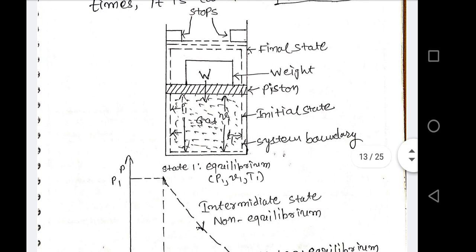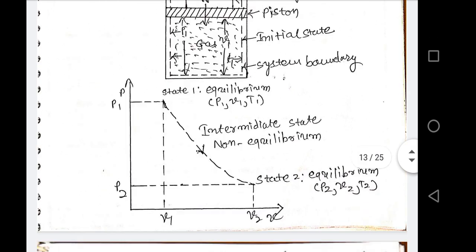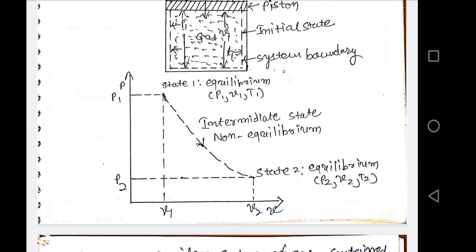Now when I remove this weight — this is a very important point — when I remove the weight, the piston directly moves up to the stops condition. The piston automatically moves in the upward direction up to the stops. In that position, volume will be increased and pressure will be decreased. So we get position number 2: P2 and V2, state 2 equilibrium P2, V2, T2.